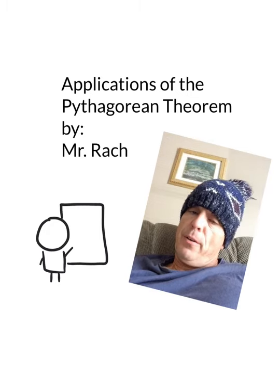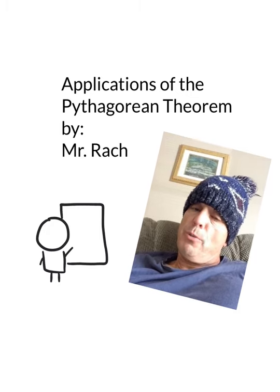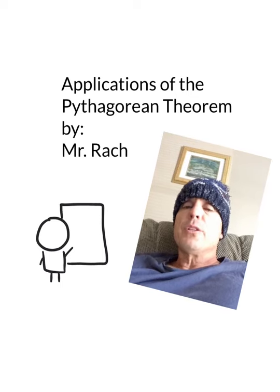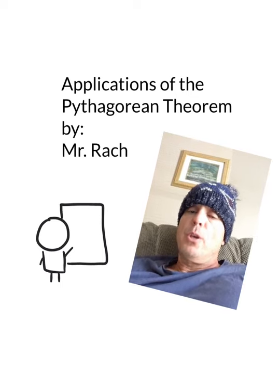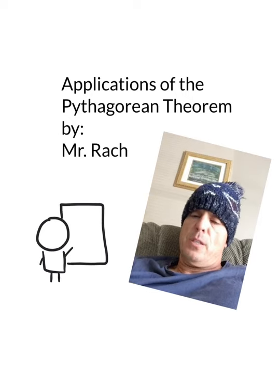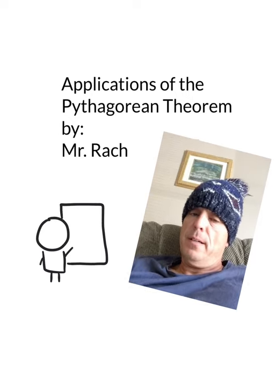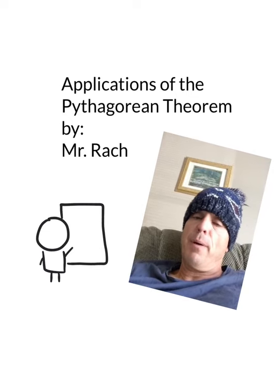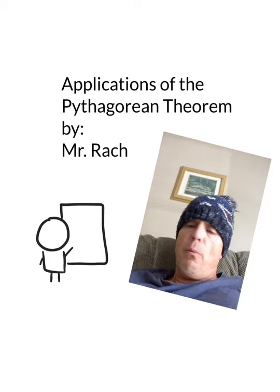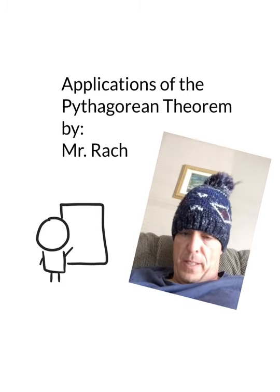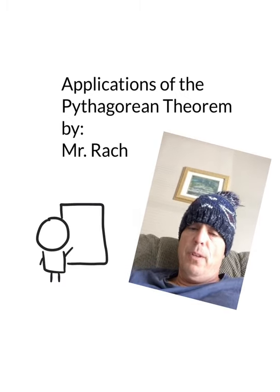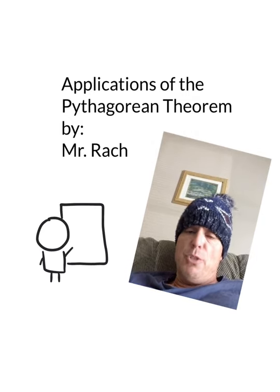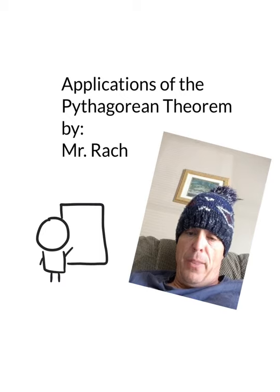We know the Pythagorean Theorem can only be used with right triangles. We know the parts of a right triangle, the legs and the hypotenuse. We know the equation, a squared plus b squared equals c squared. We know that sometimes we have to solve for a leg, other times for a hypotenuse. But why are we learning all of this? How is it even useful? Well, hopefully in these application problems you can see the usefulness of the Pythagorean Theorem.